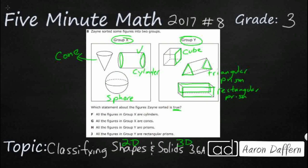But that is incorrect because it's not all cylinders. We have both a sphere and a cone. They're not three cans or three soup cans or soda cans, whatever you want to think of.